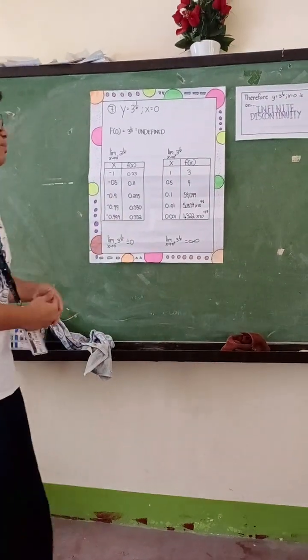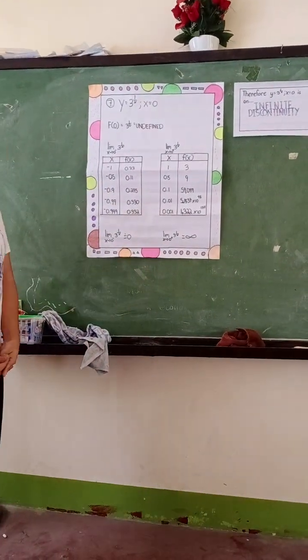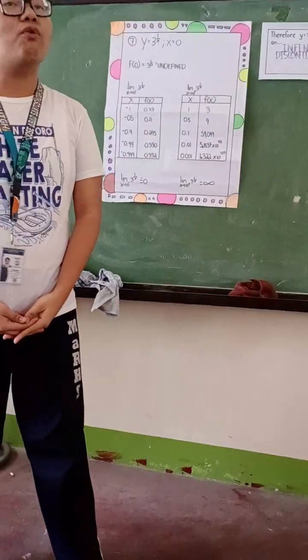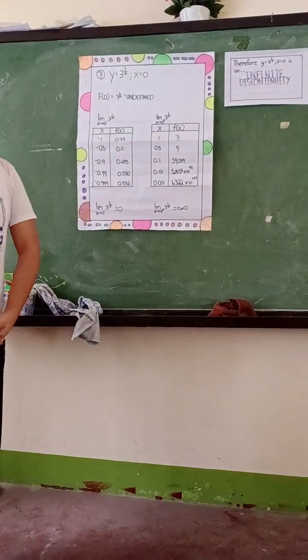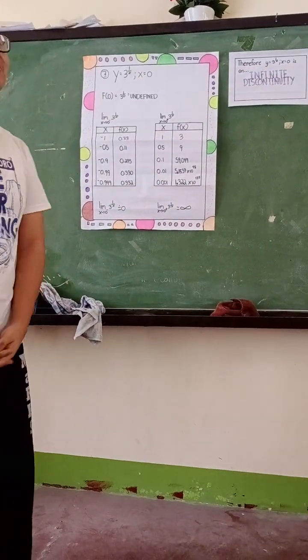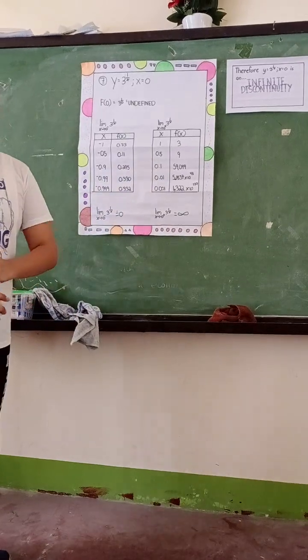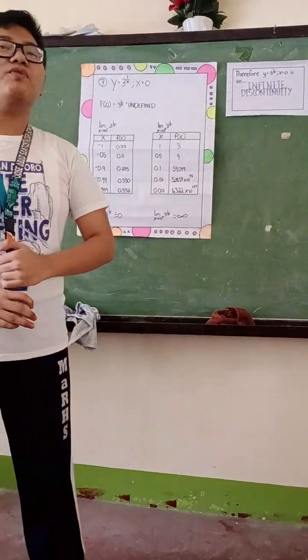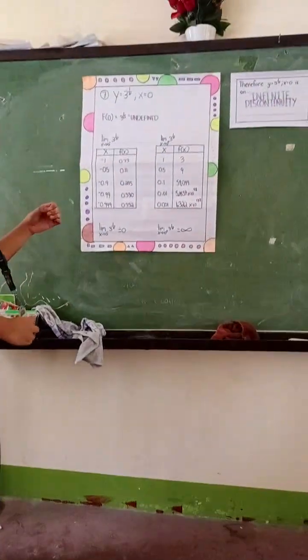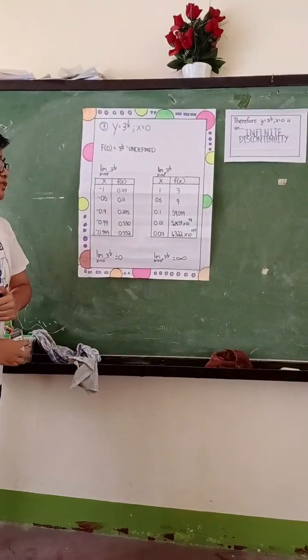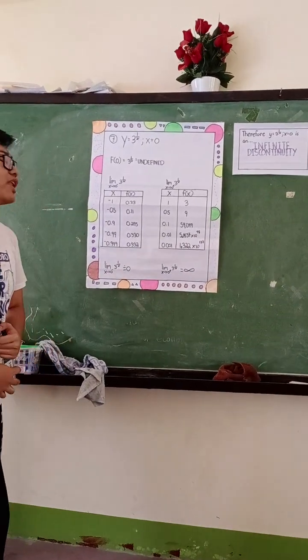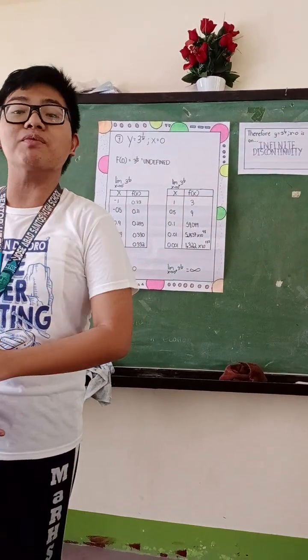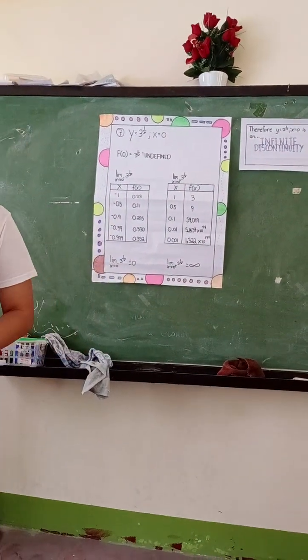We will now move on to the limit. The limit of the function 3 raised to 1 over x as x approaches 0 to the left. The corresponding values of x approaching 0 from the left are negative 1, negative 0.5, negative 0.9, negative 0.99, and negative 0.999.